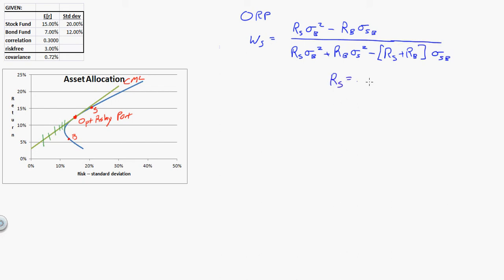Now, RS is going to be the excess returns. So, capital R, what we call excess returns, or returns above the risk-free rate. So, this would be RS minus the risk-free rate, which would be 0.15 minus 0.03, which is 0.12. And then RB would be 0.07 minus 0.03, which would be 0.04.